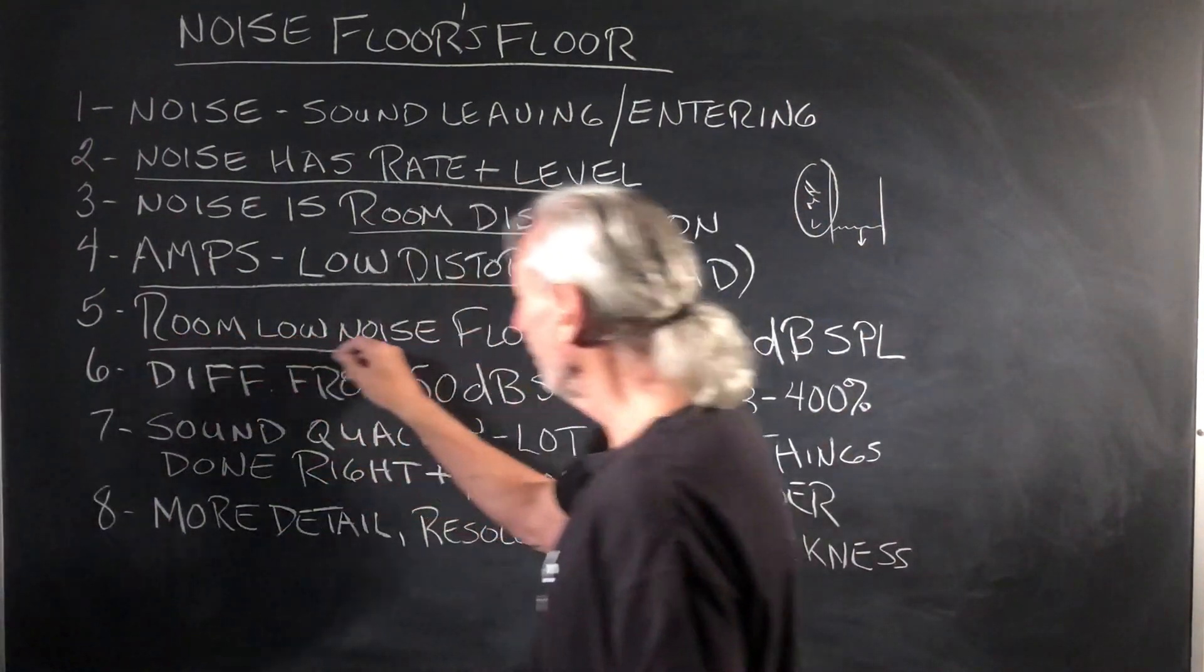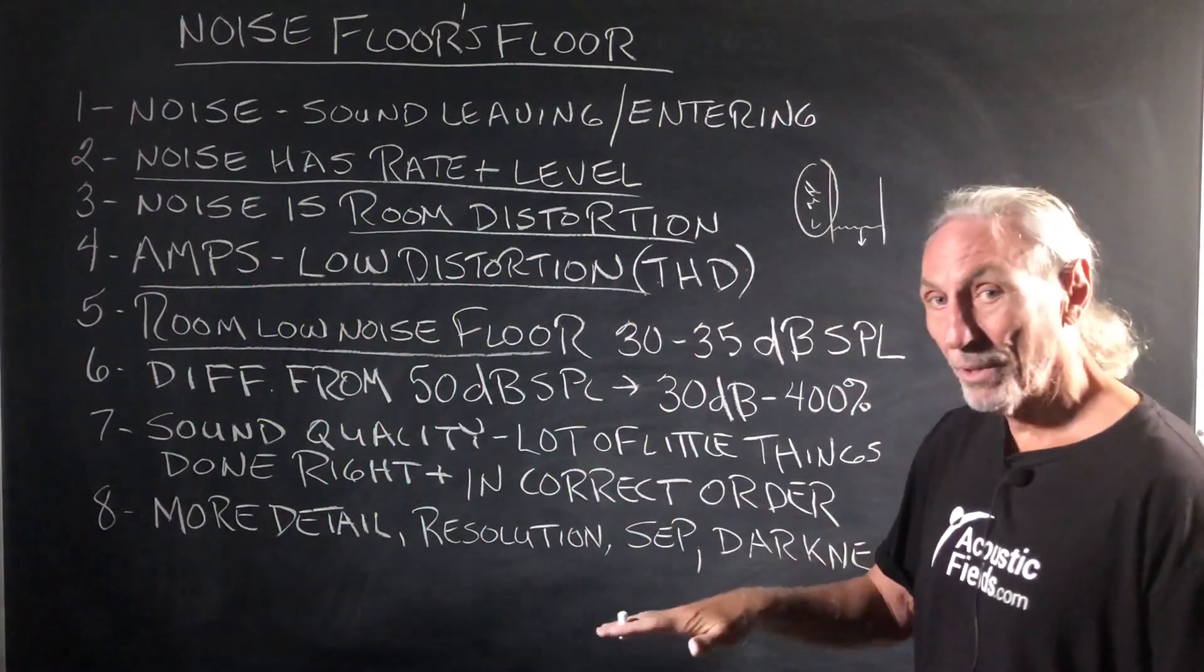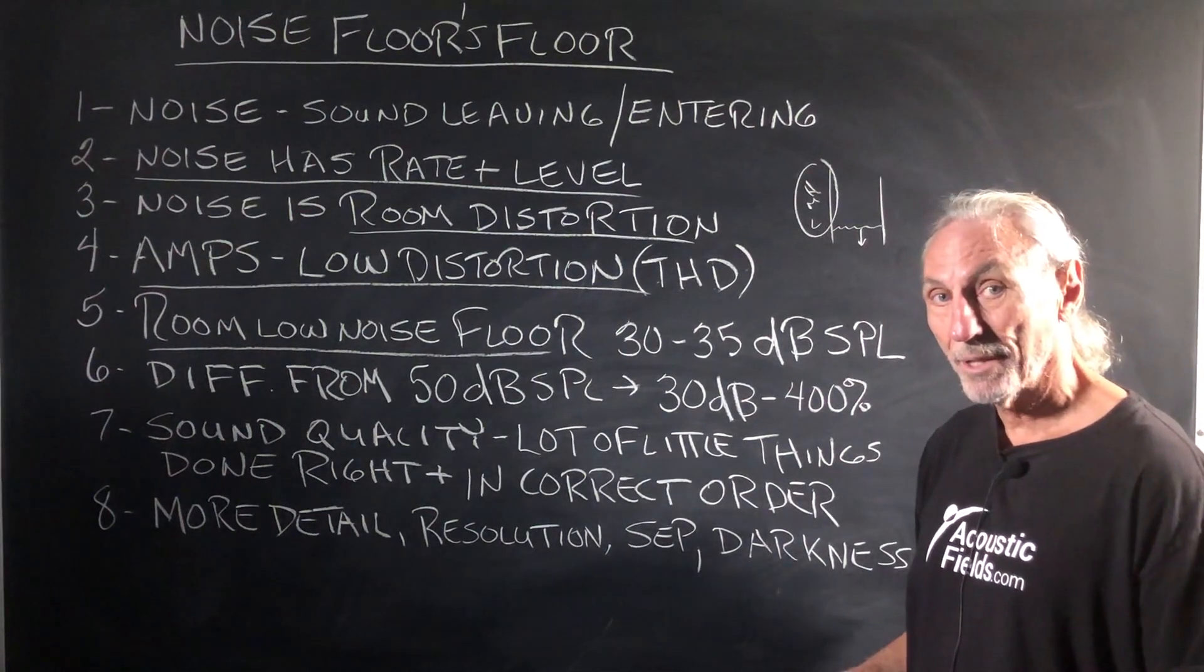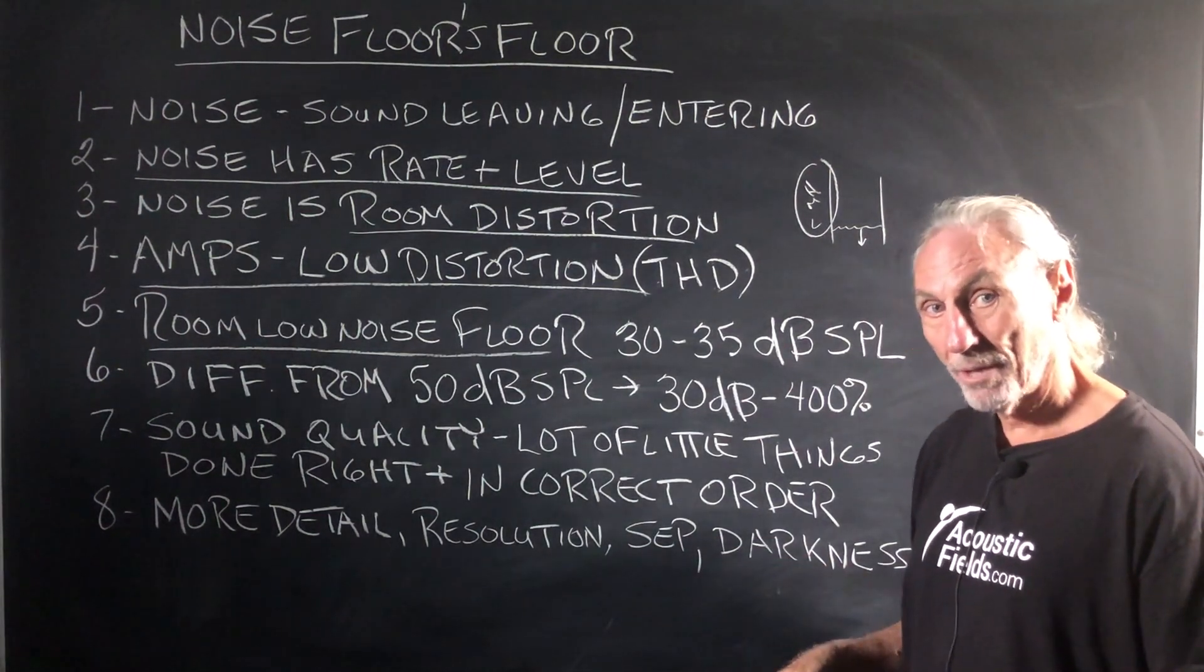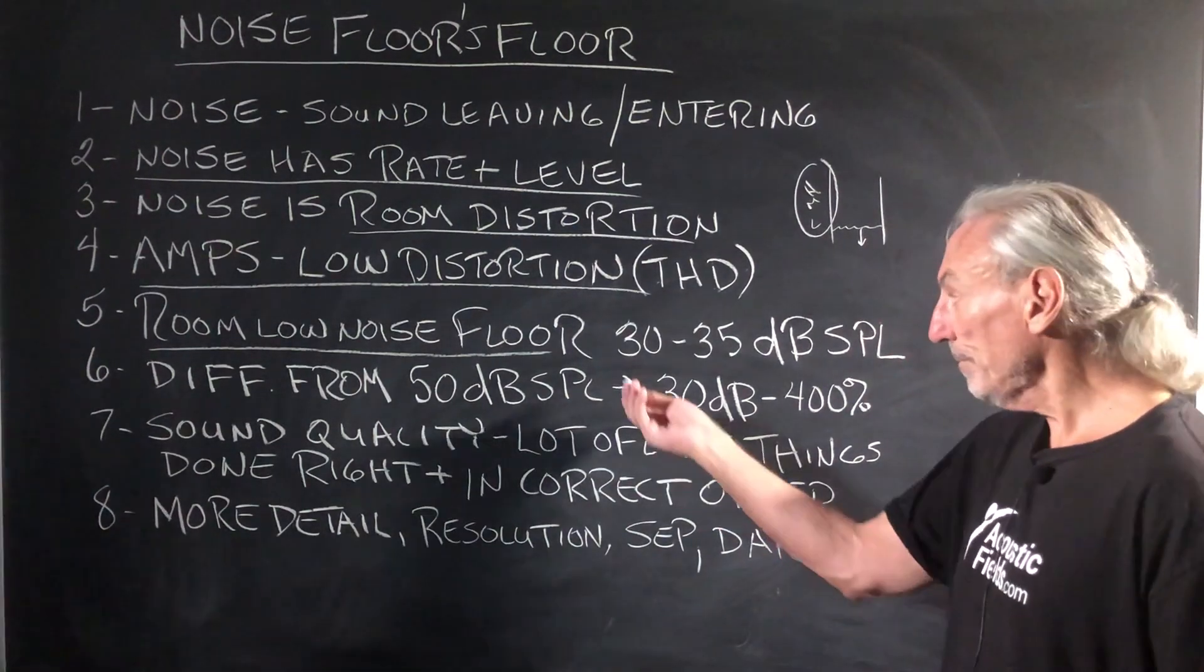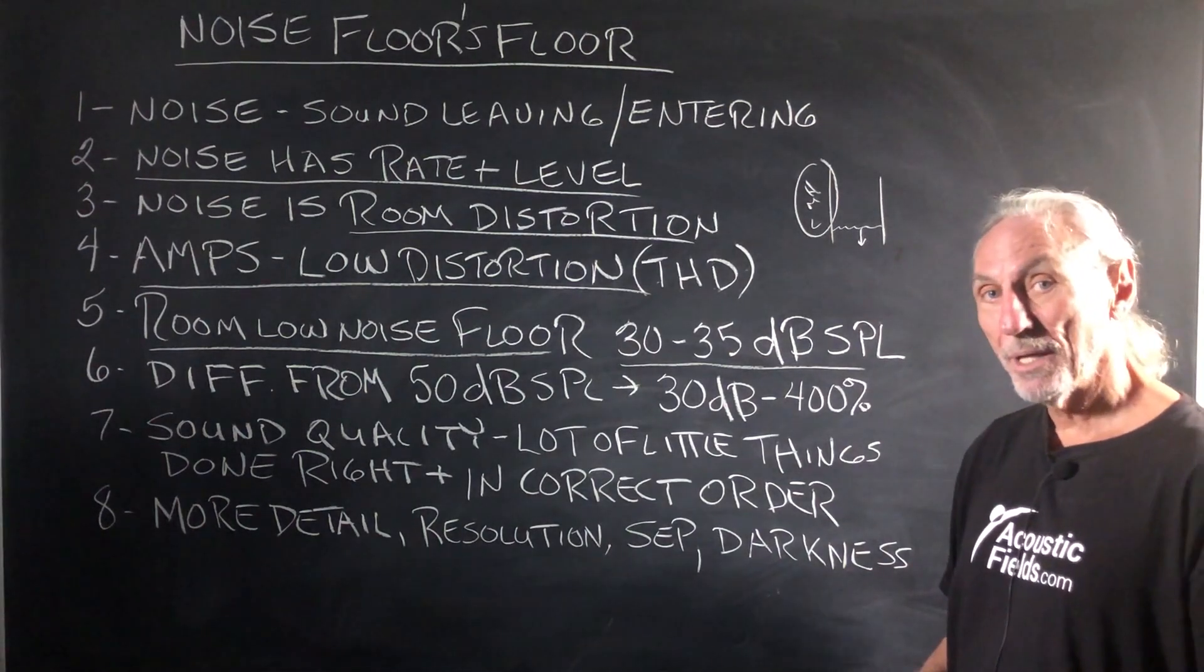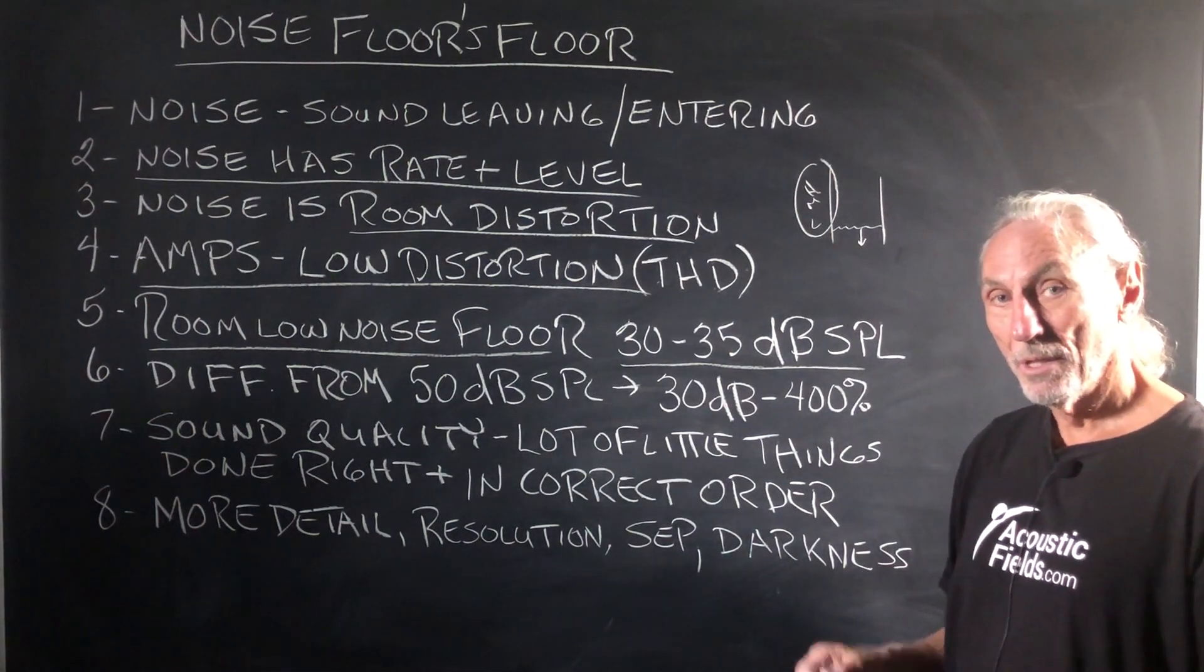So we want to lower the noise floor in a room like lowering the water level in our glass. We're sitting at the bottom of the glass, so we want to lower that water level. The water level is going to be the noise floor. We like to target 30 to 35 dB SPL in our rooms, get them as quiet as we can.